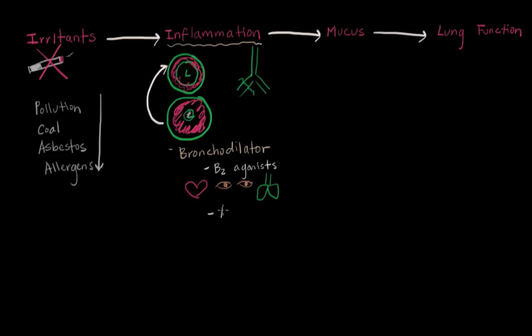Another class is the anticholinergics. So instead of agonists, these are antagonists. Cholinergic. That just means it goes against what the cholinergics usually do. Now, this is a completely different pathway. But it does the same thing of opening up the lumen of the airway. So we can get more breath in and the lung can be less inflamed.